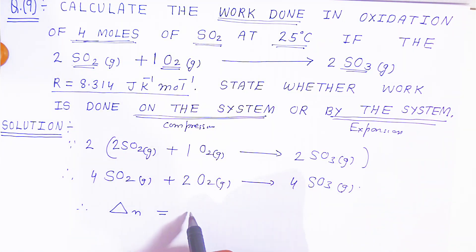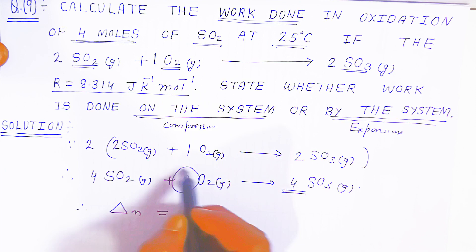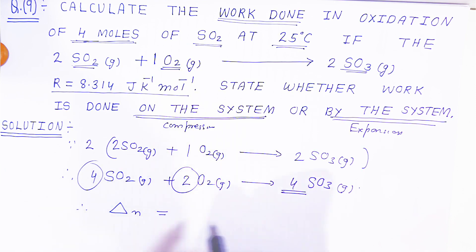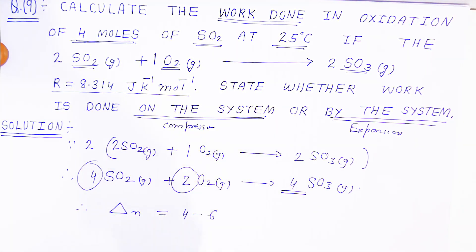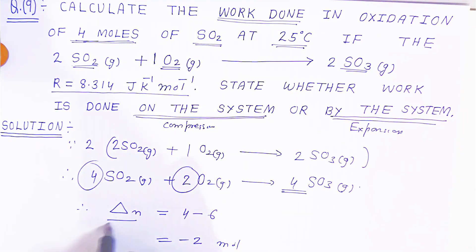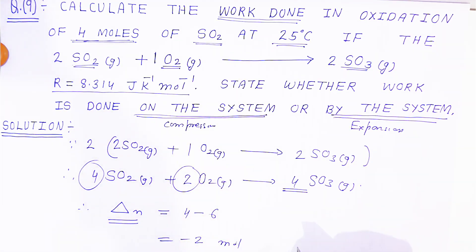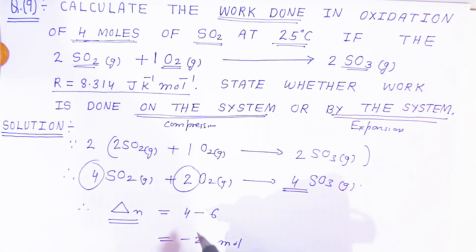Now we calculate the change in moles of gas, Δn. Moles of gaseous products = 4 (SO₃). Moles of gaseous reactants = 4 (SO₂) + 2 (O₂) = 6. Therefore, Δn = 4 − 6 = −2 moles.